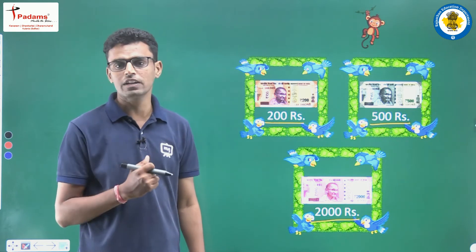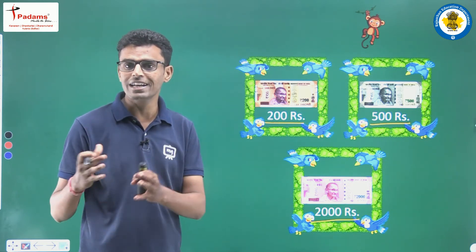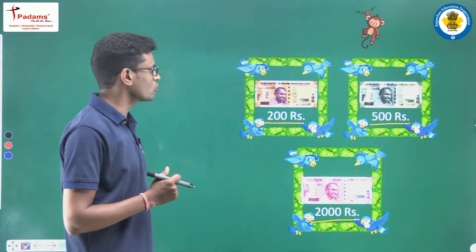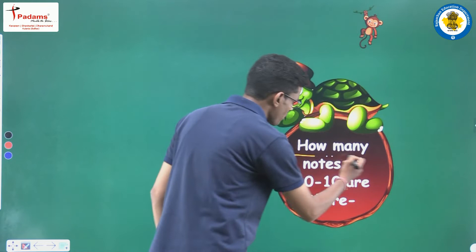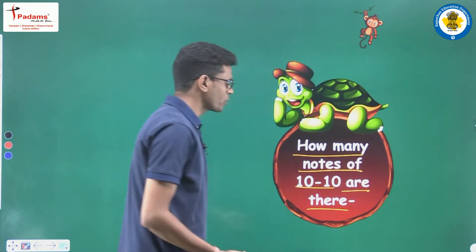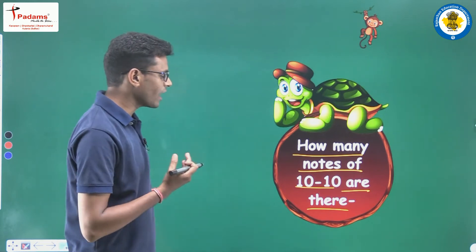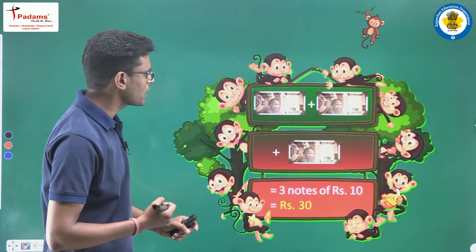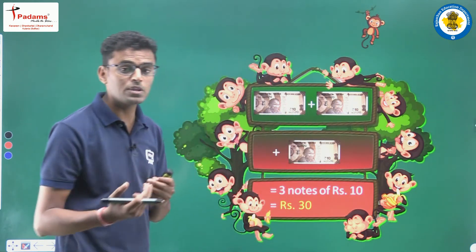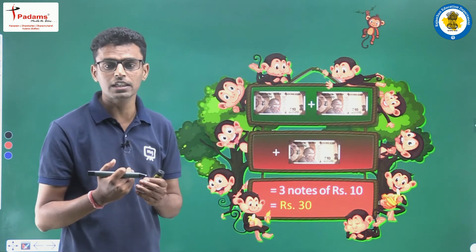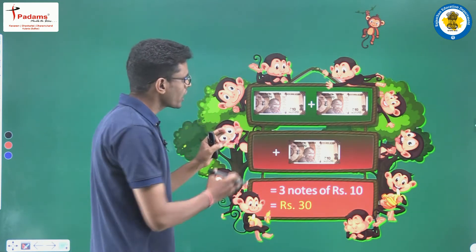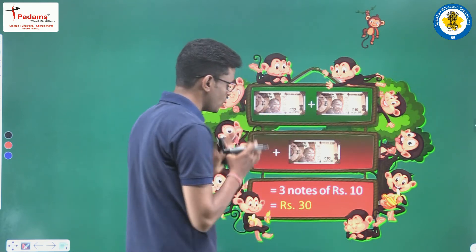Now we will do some activities to understand the addition of groups of 10. The activity is: how many notes of 10 rupees are there, and what is their total value? Here we can see the notes — these are 10 rupees notes. We need to tell the number of notes and then the total value.